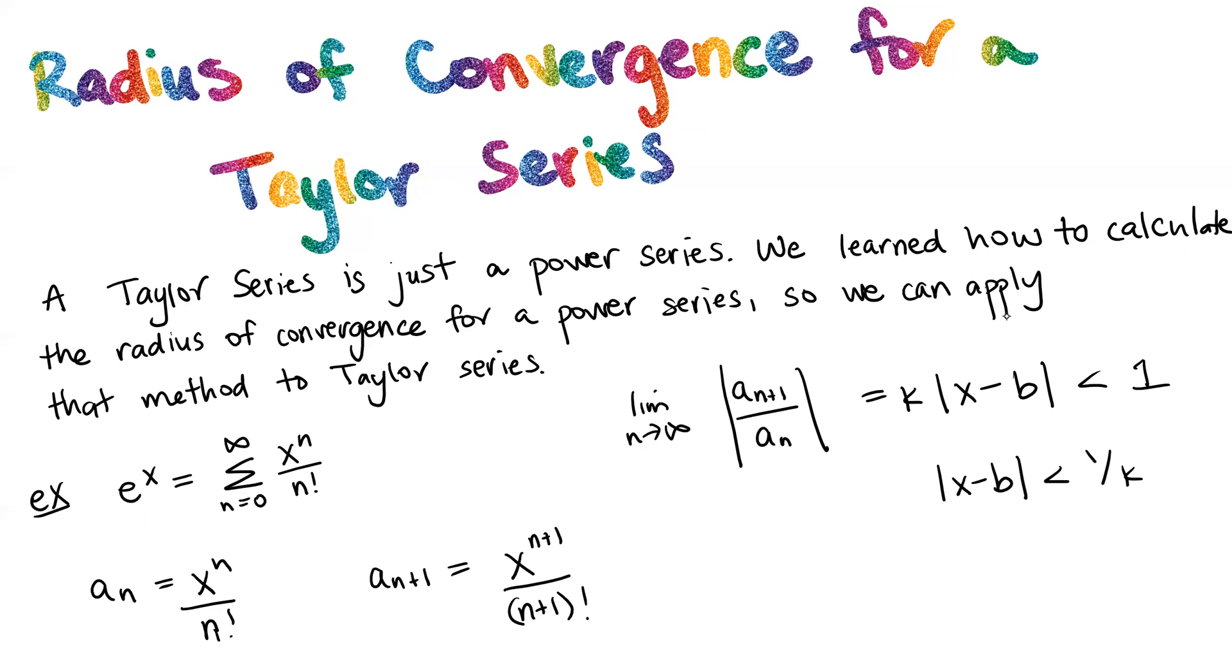Now we know that we're going to need to divide a_(n+1) by a_n, so right away I like to go ahead and simplify, rewrite this n plus one term. So I'm going to write it as x to the n times x, and then n factorial is (n+1) times n factorial.